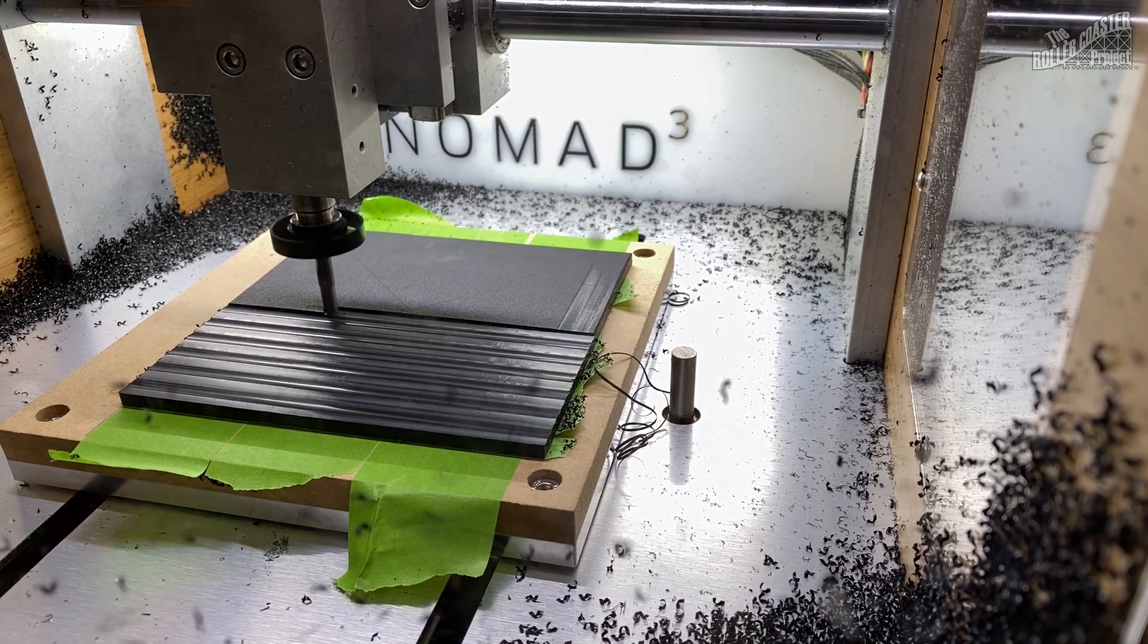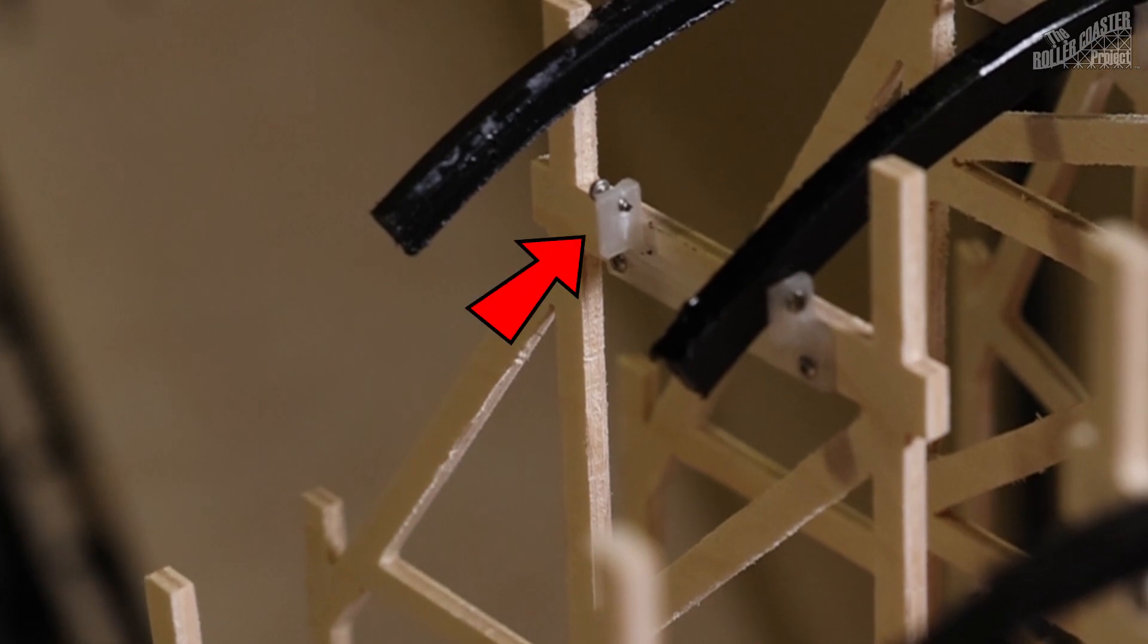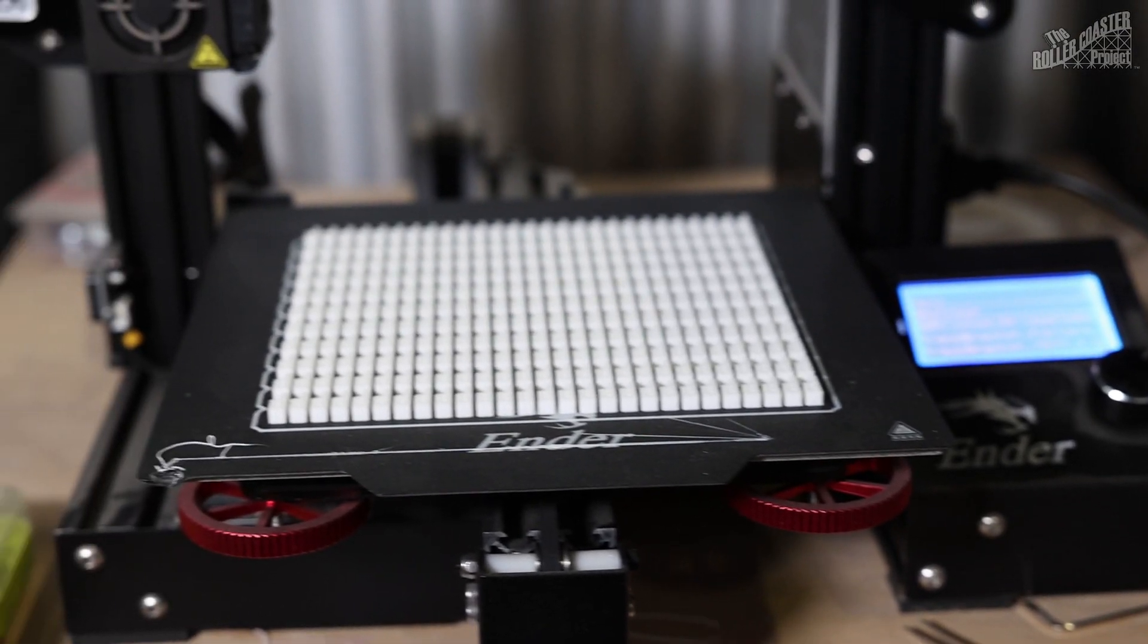Another ride part that's going to have to be reproduced many times are the track retaining brackets. Originally I was milling these parts out of plastic, then finishing them with the drill press by drilling the alignment hole that mounts to the track. That took nearly two hours to produce. Going forward, I will be making another mold to cast these parts since they're going to be repeated hundreds of times.